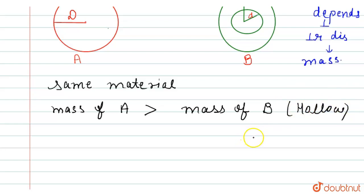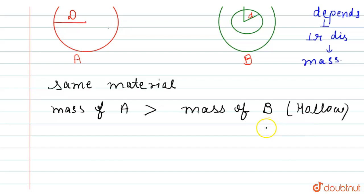Now, if we assume that both cylinders are made of the same mass, then cylinder B is stronger than cylinder A, as the mass in cylinder B is spread at a smaller area toward the outer region.